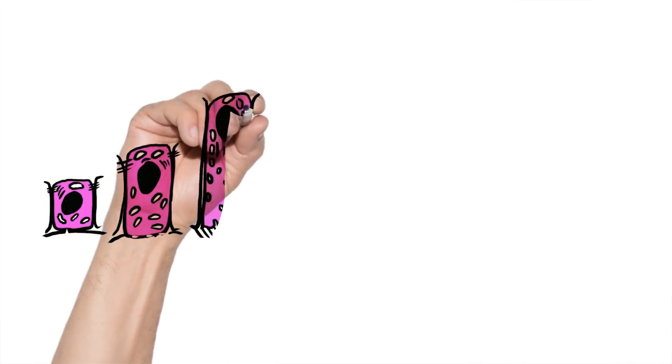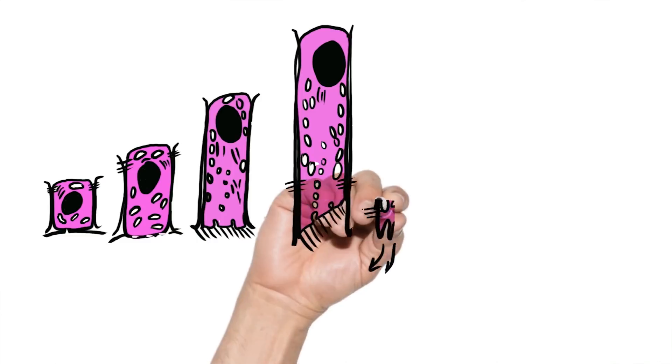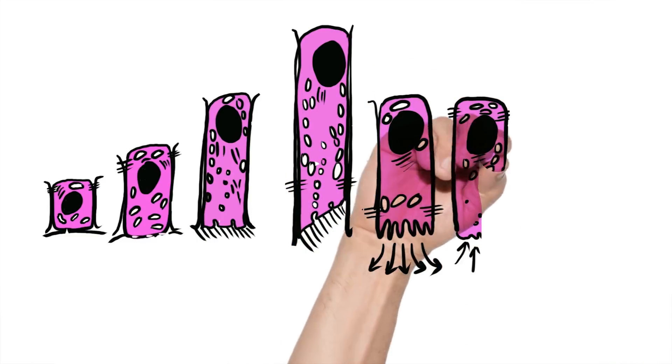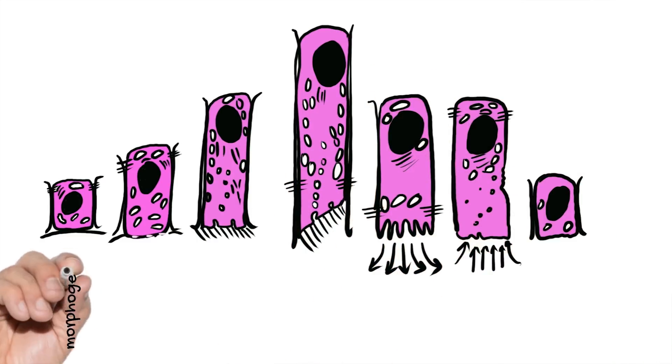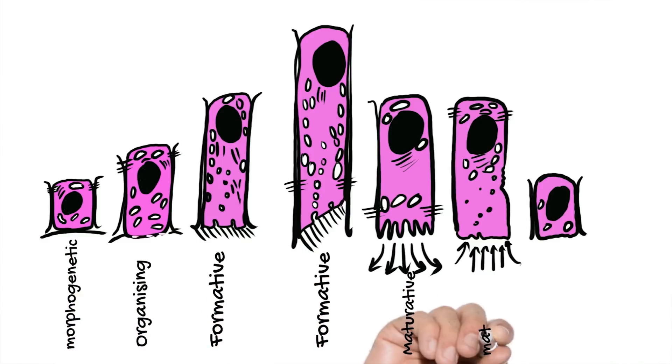The process can also be explained in terms of the life cycle stages of ameloblasts. There are totally six life cycle stages: the morphogenetic stage, organizing stage, formative stage, maturative stage, protective, and desmolytic stage. All these represent the morphological changes that the ameloblasts undergo during the whole process of amelogenesis.